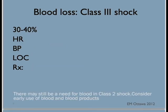Class 3 shock. When 30–40% of the blood volume is lost, the patient's heart rate will be even faster, the blood pressure drops even lower, and now the patient would have altered level of consciousness. They might be agitated and confused. In these patients, on top of crystalloid fluid, we would also be giving blood.